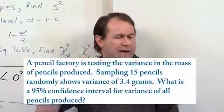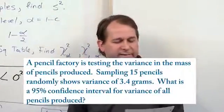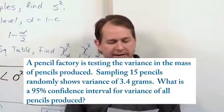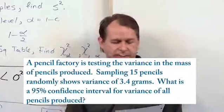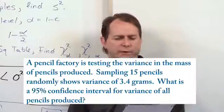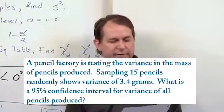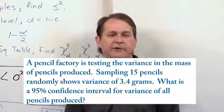So the question says: A pencil factory is testing the variance in the mass of pencils produced. Sampling 15 pencils randomly shows a variance of 3.4 grams. What is a 95% confidence interval for the variance of all pencils produced in that factory?